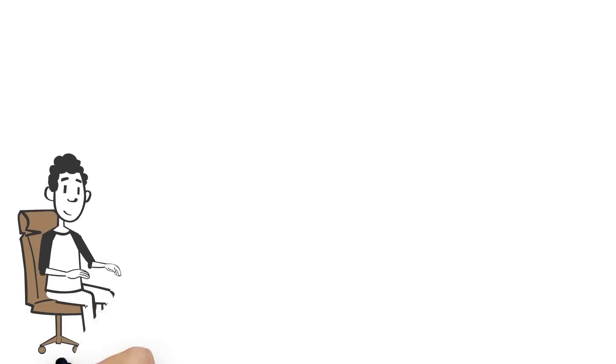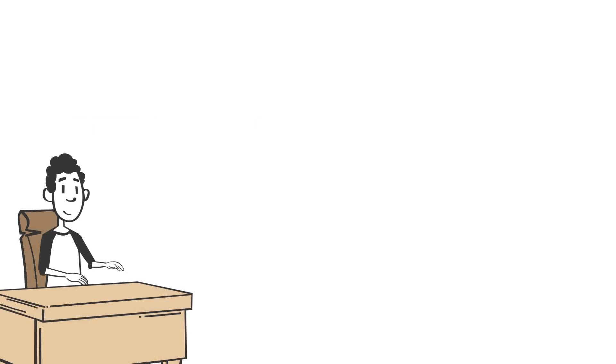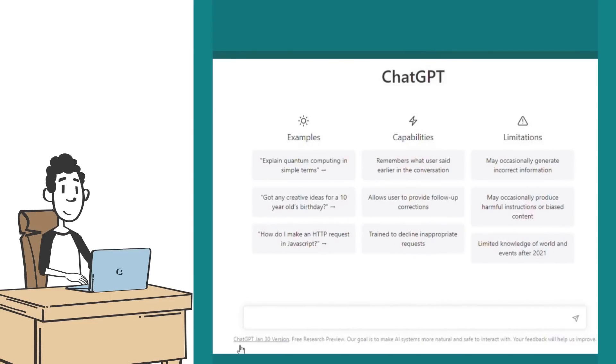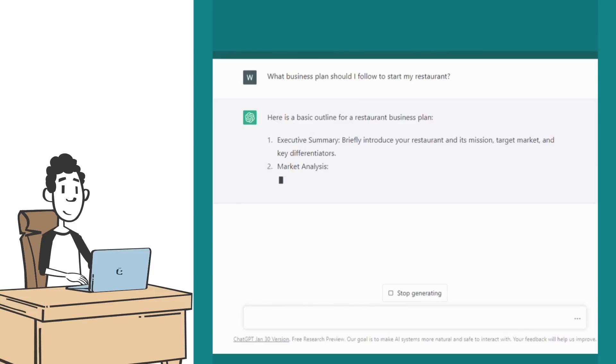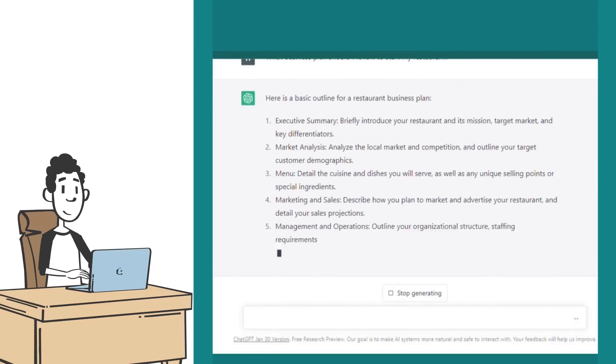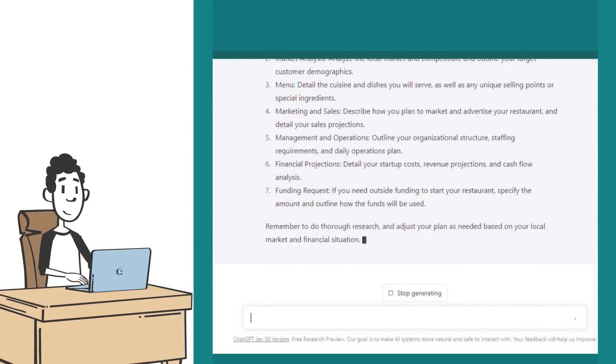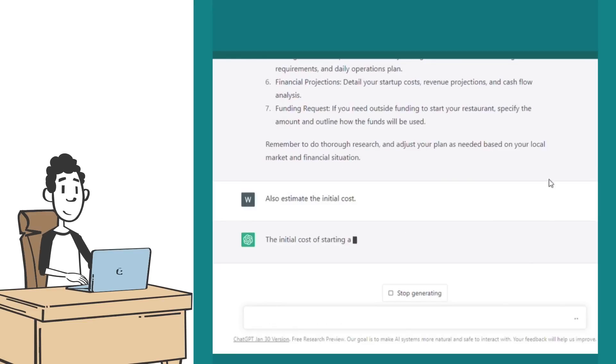Now that James understands what ChatGPT is capable of, James can ask ChatGPT for advice on what type of business he should start based on his skills, interests, and market trends. ChatGPT can also help James identify his target audience and assist with creating a business plan, estimating initial costs, and outlining the steps he needs to take in order to make his business a success.